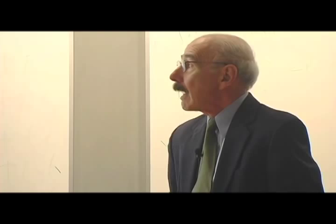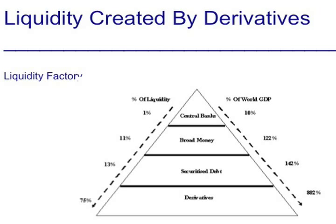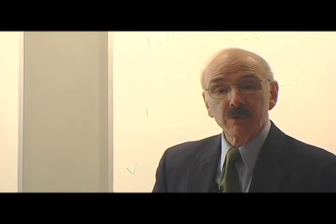This chart shows liquidity in the world — that is, the availability of credit and money — at the beginning of 2007. Remember, derivatives have doubled since 2007, so this chart will understate their importance. Down the left-hand side: liquidity created by central banks is 1%, by the broad money supply 11%, by securitized debt 13%, and derivatives account for 75% of the world's liquidity. Which is why when derivatives seized up as they have recently, we have a credit crunch. If derivatives were 75% at the beginning of 2007, they're probably 90% now as a percentage of world liquidity.